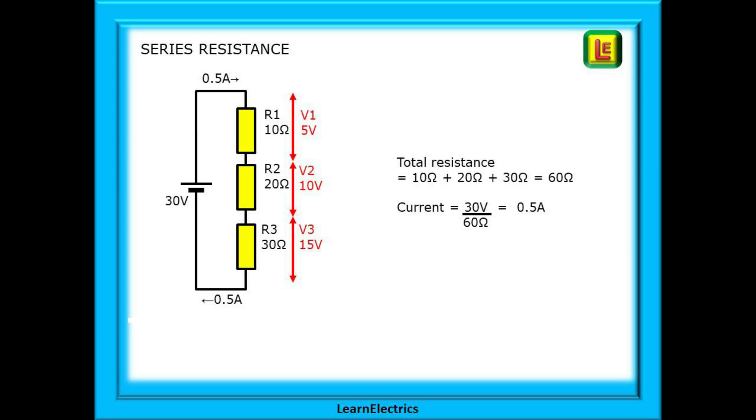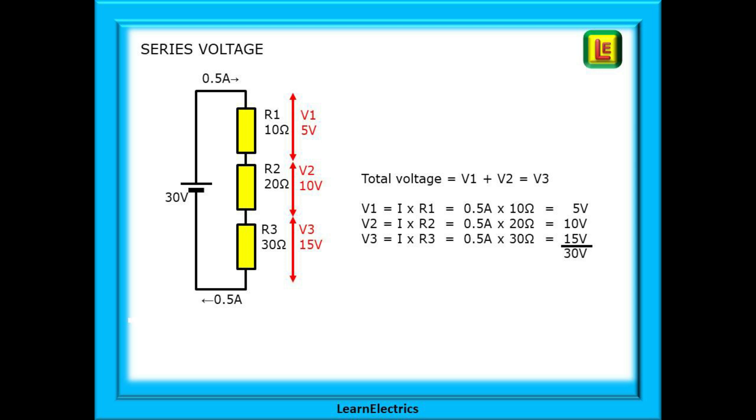The same method works with 3 resistors in series. Find the total resistance by adding the resistances together and then calculate the current. As it is a series circuit, the same current passes through each resistor. Now we can calculate the voltage drop across each resistor as shown, and all the voltage drops will add up to the source voltage.